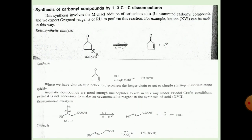Next, the synthesis of a carbonyl compound by 1,3 C-C carbon-carbon disconnection. This synthesis involves Michael addition to an alpha-beta unsaturated carbonyl compound, and we expect the Grignard reagent or RLi to perform this reaction. For example, ketone XVI can be made this way. The retrosynthetic analysis: the target molecule is broken down — the R group is separated and an alpha-beta unsaturated compound is formed. In the synthesis, the alpha-beta unsaturated ketone reacts with R, and the target molecule is formed. It is better to disconnect the longer chain to get simpler starting materials. Aromatic compounds are good nucleophiles for addition under Friedel-Crafts conditions, so it is not necessary to make the organometallic reagent.